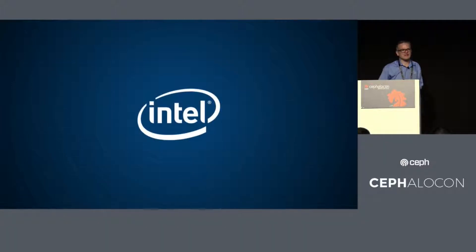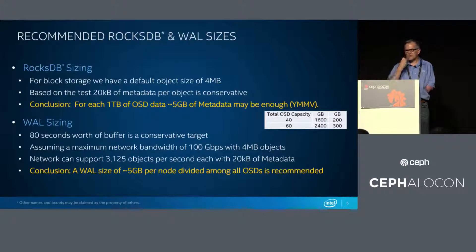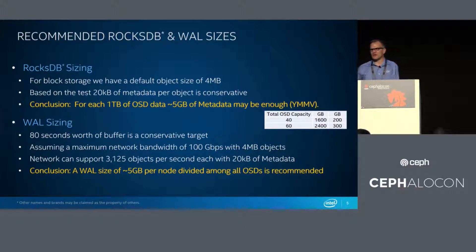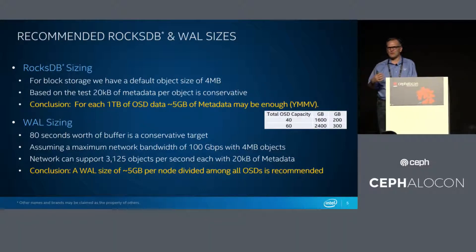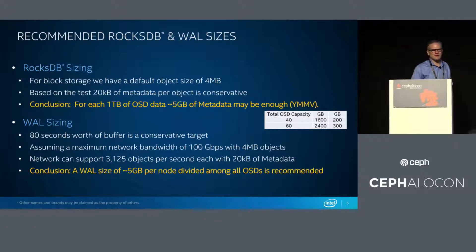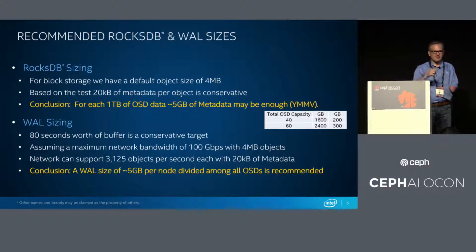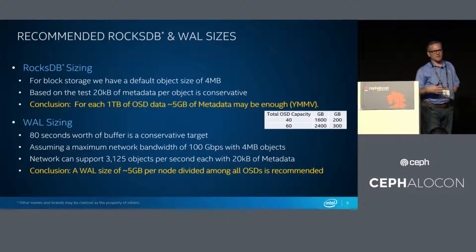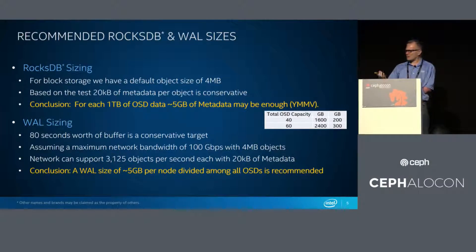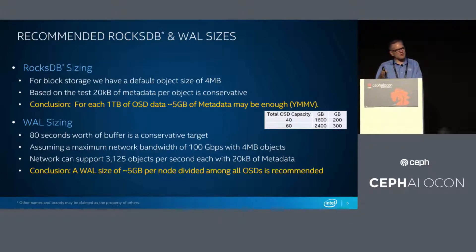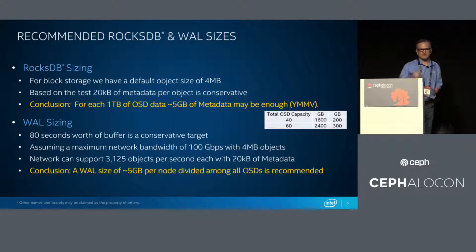That's about it. We didn't want to take up too much time, but this is a question we get a lot. We wanted to make sure we had a good quantitative answer rather than guessing, because the numbers seemed a bit larger than what we actually needed. When we're talking to customers and looking at sizing, figuring out what drives to use — our Optane drives come in 375GB, 768GB, and 1.4TB sizes — that 300GB figure fits in nicely with our available sizes.